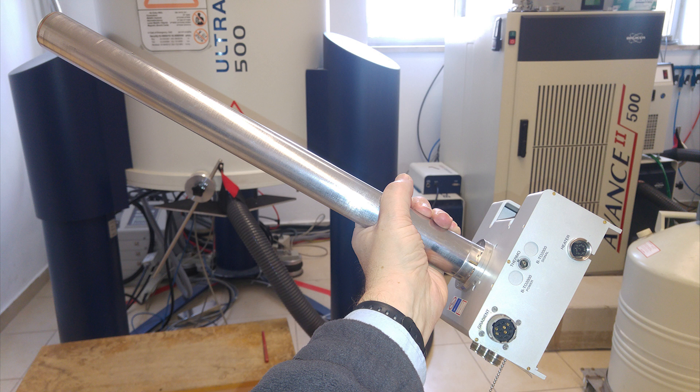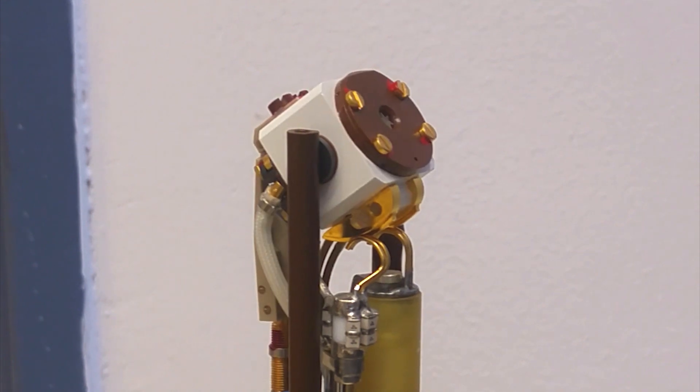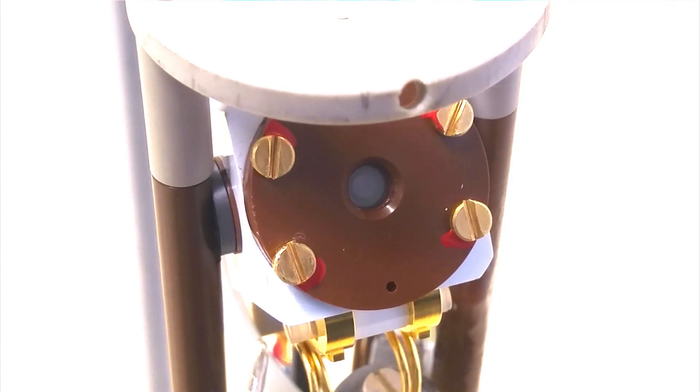An NMR sample is measured by a probe in the magnet. The probe transmits to and receives radio frequencies from the sample. In the case of solid-state NMR, the probe also tilts and rotates the sample.